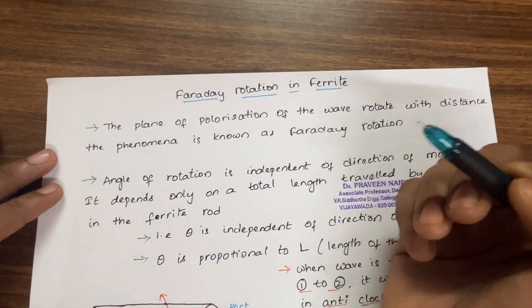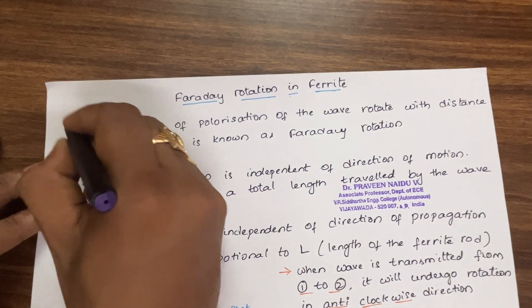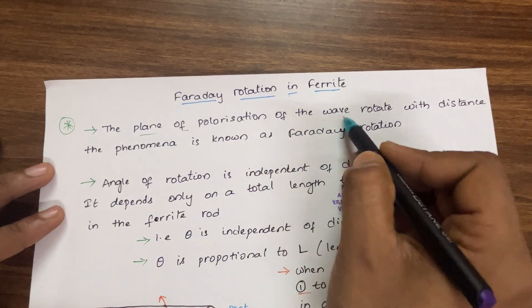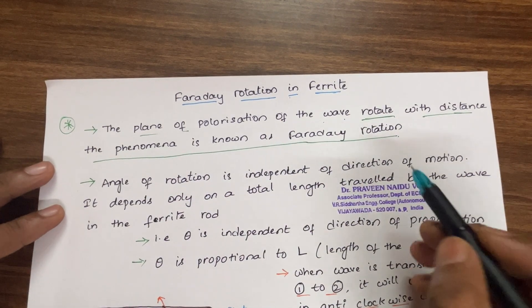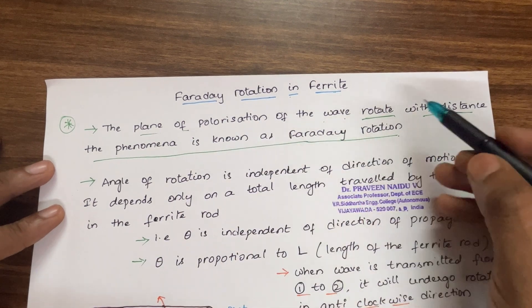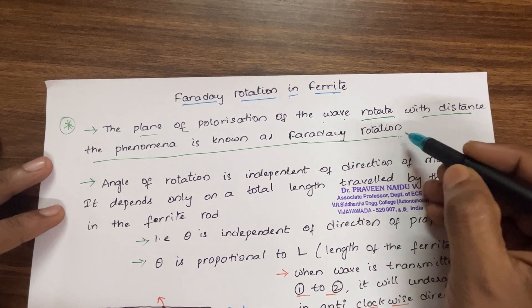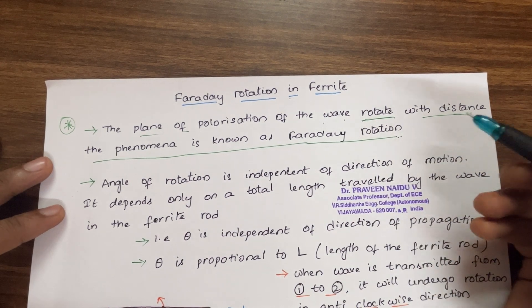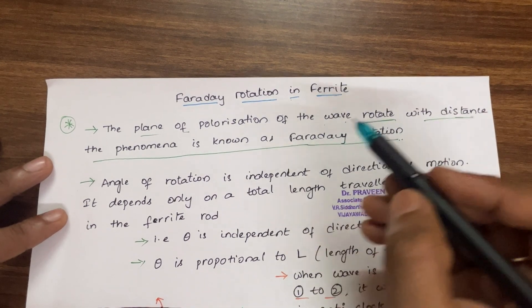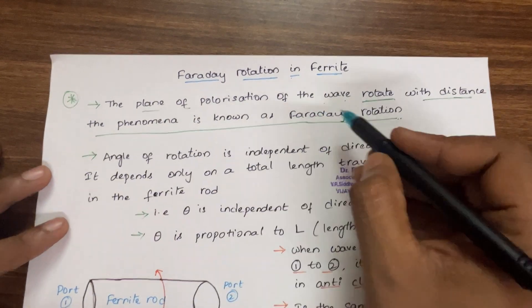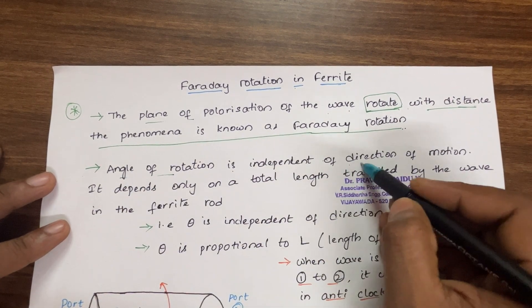One important property of ferrites is Faraday rotation. The plane of polarization of a wave rotates with distance — this phenomenon is known as Faraday rotation. Based on this phenomenon, multiple microwave components will be discussed in upcoming lectures. The angle of rotation is independent of the direction of motion.